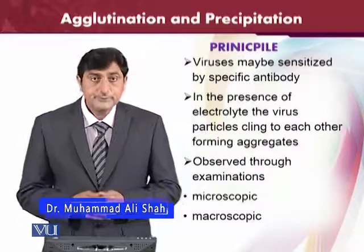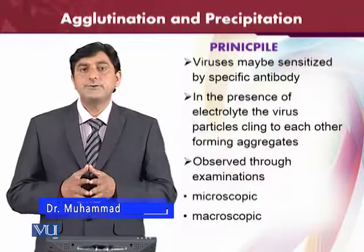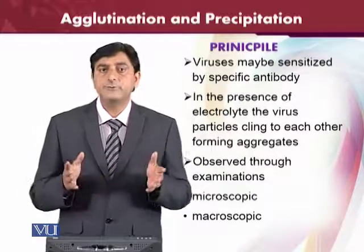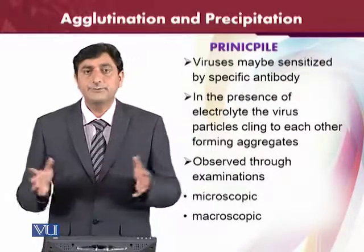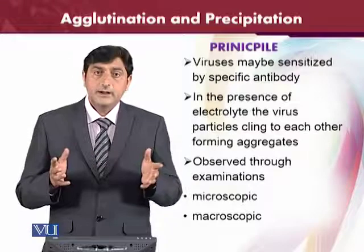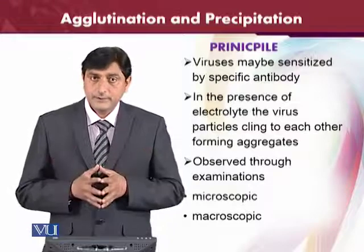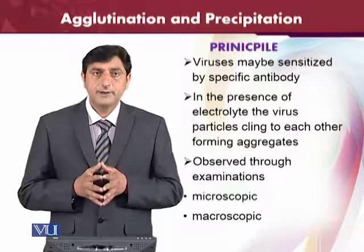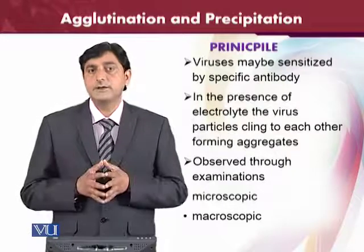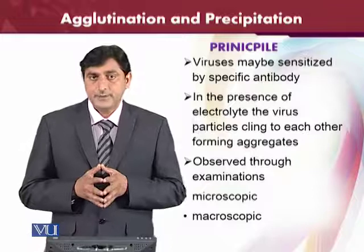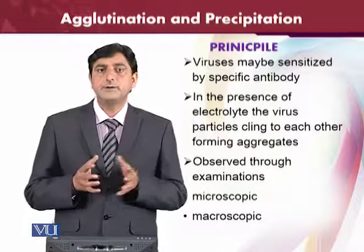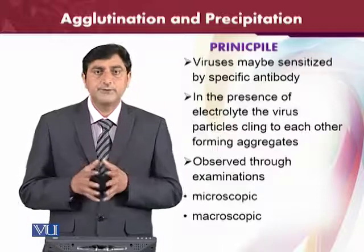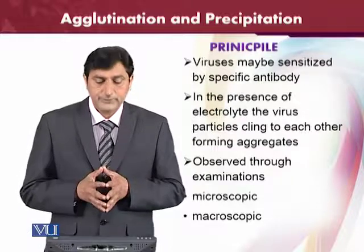The basic principle is that the virus can be agglutinated by the specific antibody. If we have the specific antibody we can agglutinate the viruses, and if electrolytes are present, the viruses will bind to each other forming aggregates. That is why they are called the agglutination test — viruses form special aggregates in the presence of electrolytes and are also agglutinated by specific antibodies.